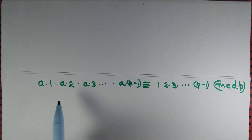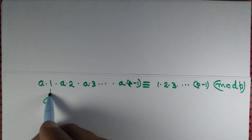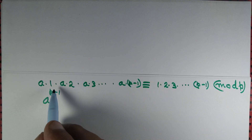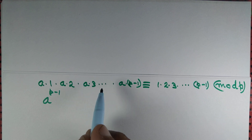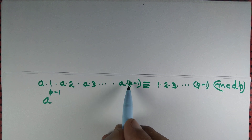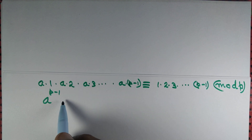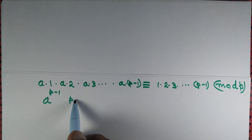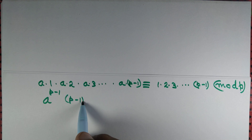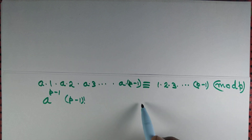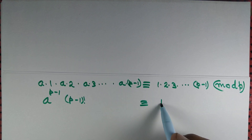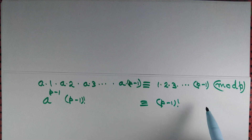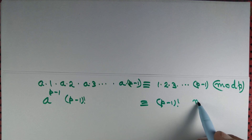So a to the power p minus 1 times (p-1)! is congruent to (p-1)! modulo p.